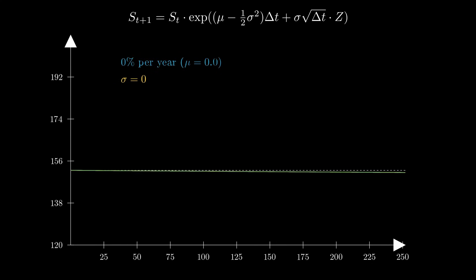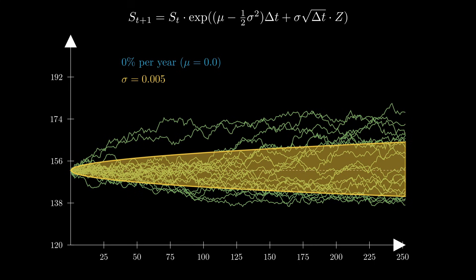With a mu value of 0, if we increase the sigma value to a modest 0.005, we can see that the generated sample paths are distributed around the initial price of 152, and stay within a reasonably tight range of the initial price.